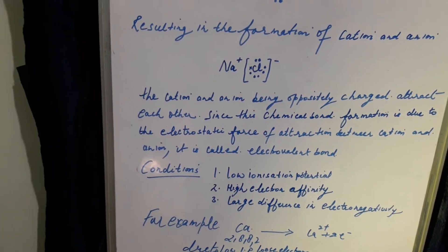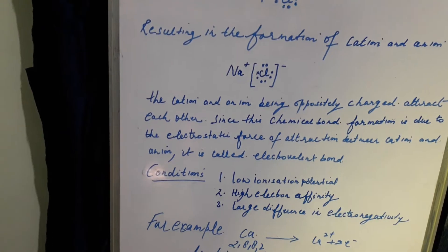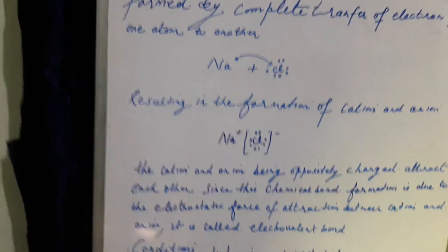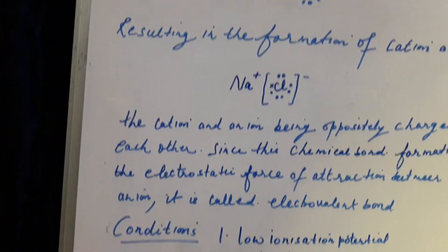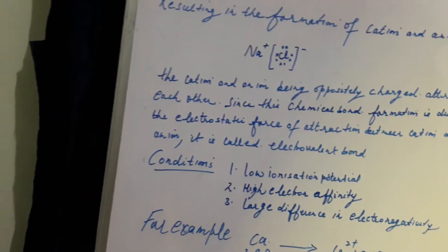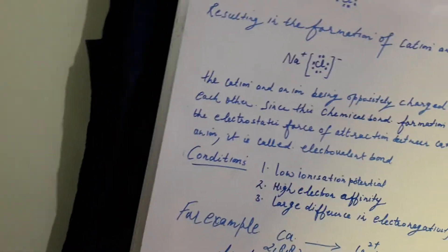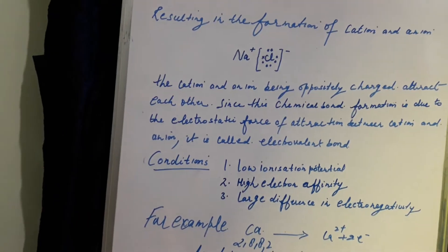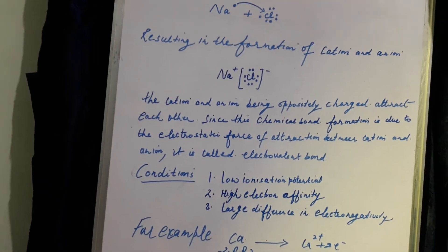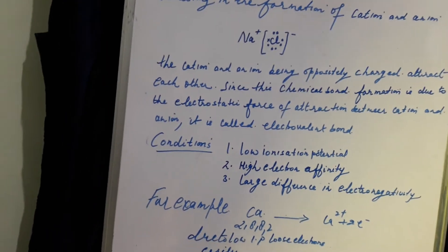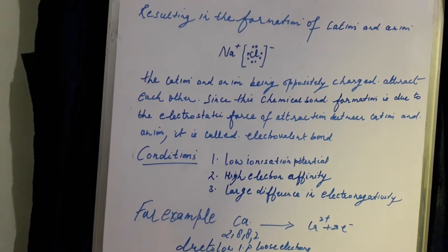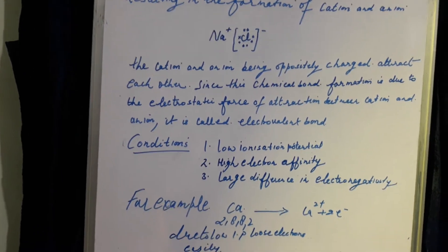The second condition is high electron affinity. Non-metals have high electron affinity, so they can easily gain an electron to form an anion.